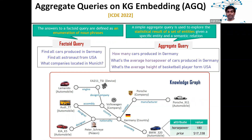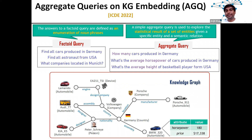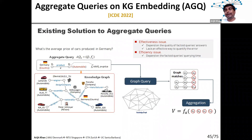In our latest work at ICDE 2022, we further looked into aggregate queries over knowledge graph embedding. Aggregate queries are more difficult than classical factoid queries. In factoid queries you look for a set of answers — for example, find all cars produced in Germany. In aggregate queries, you look for statistics over those answers, such as how many cars are produced in Germany or what is the average horsepower of cars produced in Germany. People often prefer aggregates over all answers because all answers can be too many and overwhelm the user.